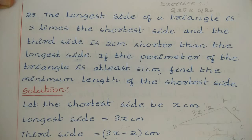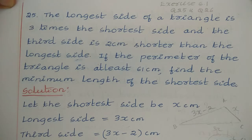Q25: The longest side of a triangle is 3 times the shortest side, and the third side is 2 cm shorter than the longest side. If the perimeter of the triangle is at least 61 cm, find the minimum length of the shortest side.